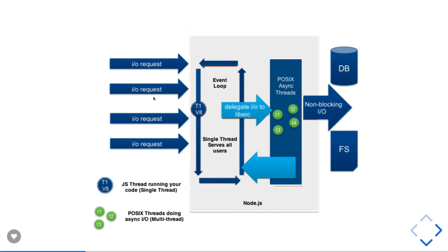Consider three lines of code: console.log (synchronous), an asynchronous operation, and another synchronous operation. Synchronous code runs directly and pops off the call stack. Asynchronous code is recognized as doing some processing, so Node.js pushes it onto the event queue. Synchronous code executes immediately from the stack while asynchronous tasks wait in the event loop.